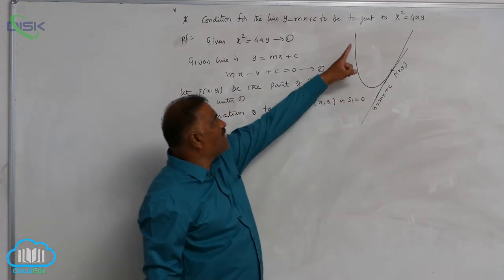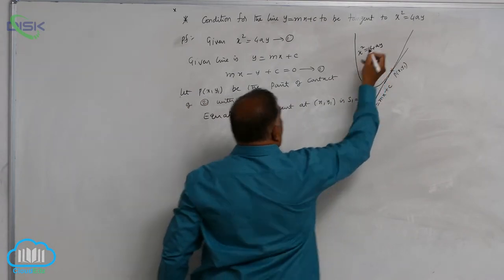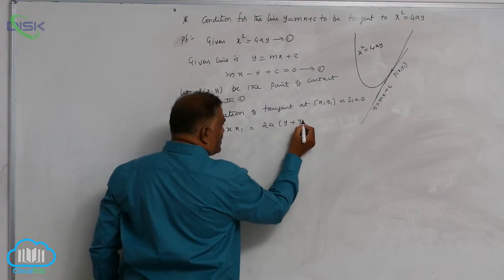Now write down S1 for the parabola x square equal to 4ay. Now this is xx1 is equal to 2a into (y plus y1).